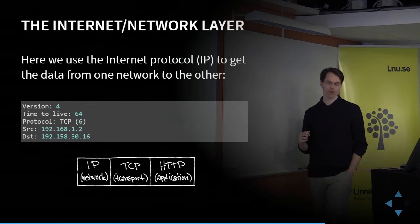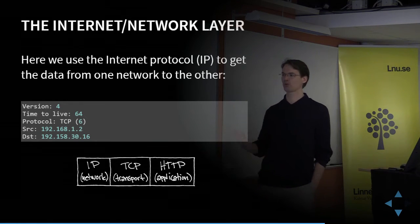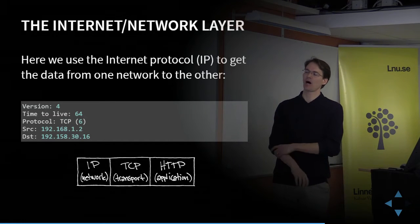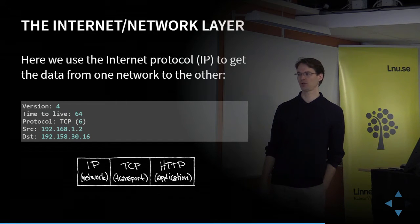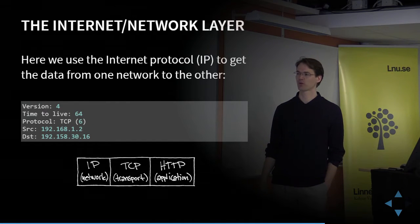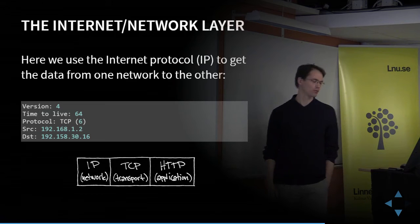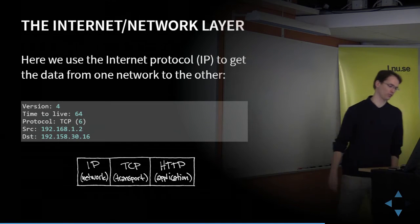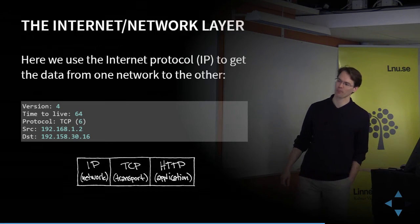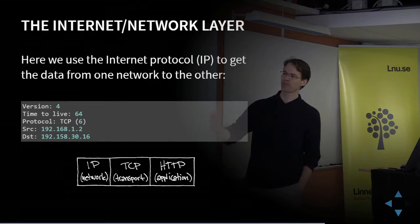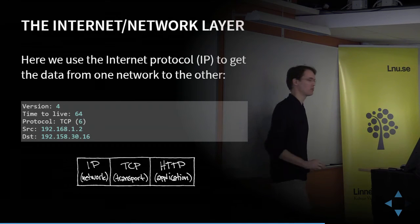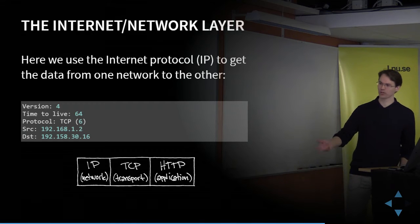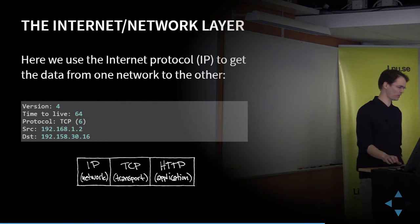The source IP address of my computer and the destination IP address of the receiving computer are included. In IPv4, this is a 32-bit number, often divided into four 8-bit sections separated by dots. Based on this number, the network can deliver the message to the right local network and to the right host within that network.